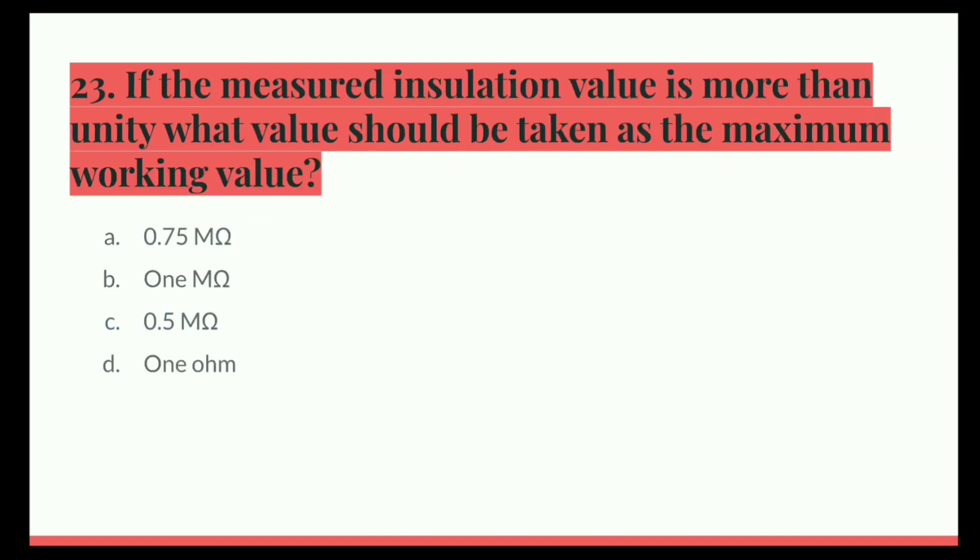Next question. If the measured insulation value is more than unity, which value should be taken as the maximum working value? Option A, 0.75 megaohm. B, 1 megaohm. C, 0.5 megaohm. D, 1 ohm. And the correct answer is 1 megaohm.